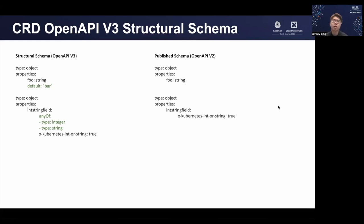Without the OpenAPI v3 feature, we wouldn't be publishing the OpenAPI v3 specification — we'd still be publishing v2. The API server is able to understand OpenAPI v3 through the structural schema, but because it's not able to publish v3, certain fields and objects need to get converted into OpenAPI v2. For most fields that's not a problem — it's a direct conversion — but for certain fields that are only representable in v3 and not in v2, such as default and any of, the information gets stripped. For example, the Kubernetes type int-or-string, which can be either an integer or a string, just gets stripped down to no type in OpenAPI v2.